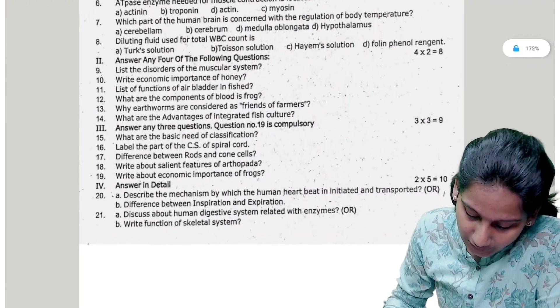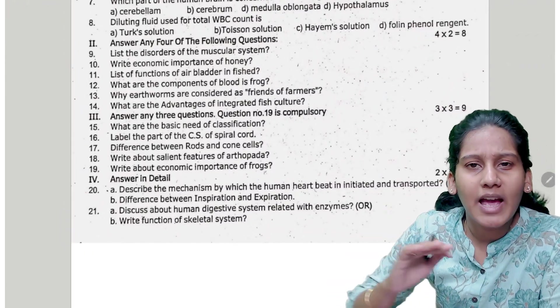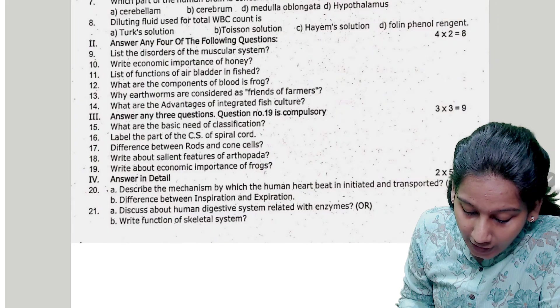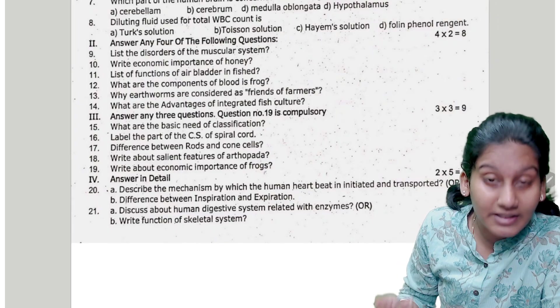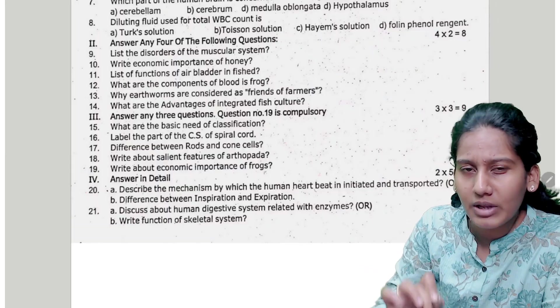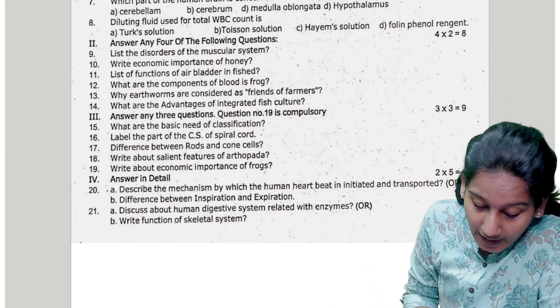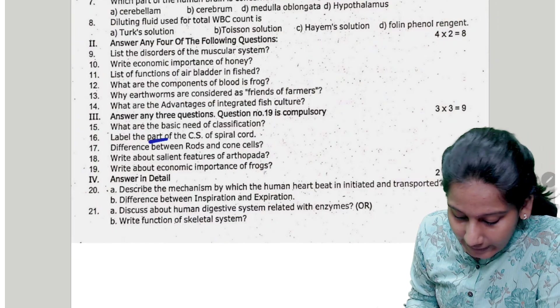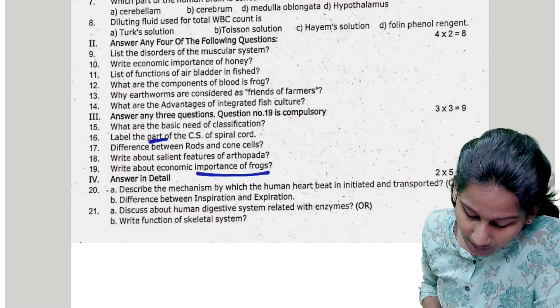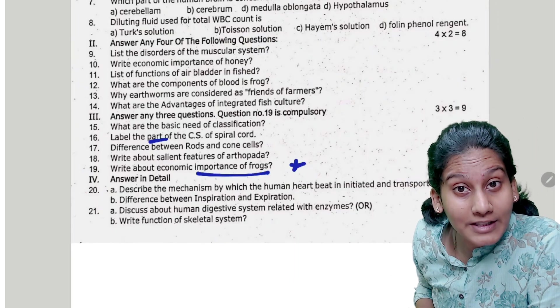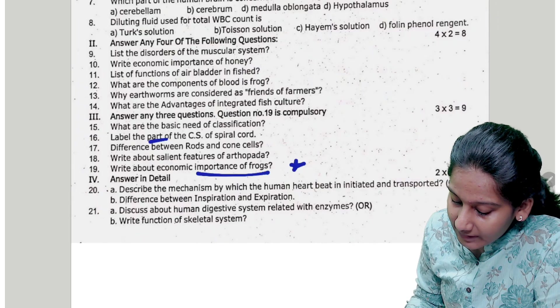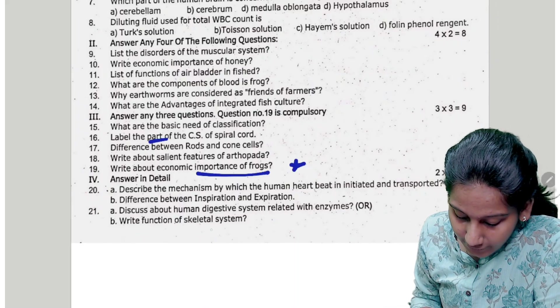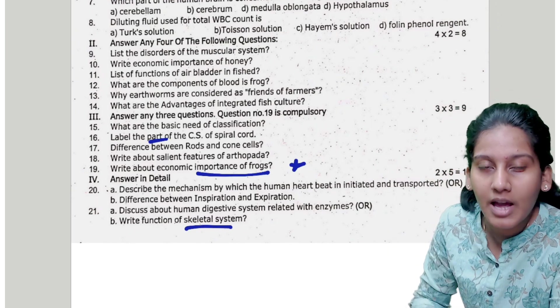And that is the zoology paper. So we can see 1 mark in zoology. We can see 2-3 marks. So disorders of muscular system - if you are looking for locomotion and movement. You can see 2 mark, 3 mark, 5 mark. You can see a sliding filament. That is economic importance of honey. Functions of air bladder. Competence of blood and frog. Friends of farmers. What are we talking about? You can see a lot of reasons. You can see a lot of things. Just that keywords. I can see a lot of things.